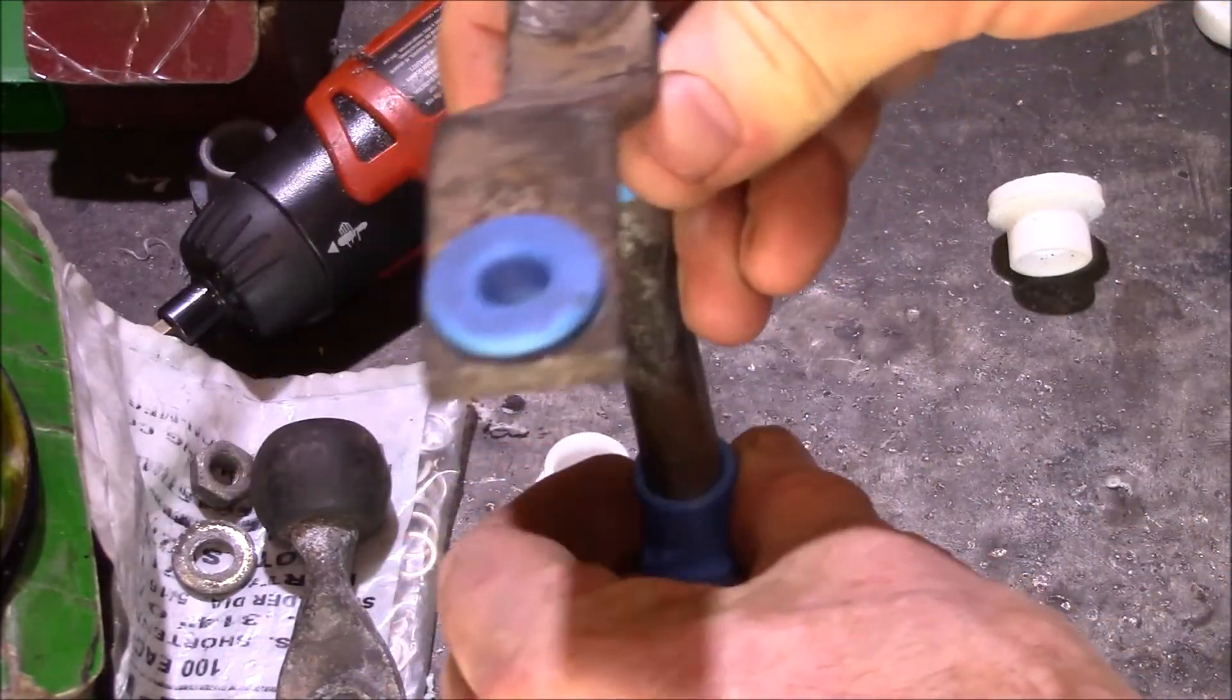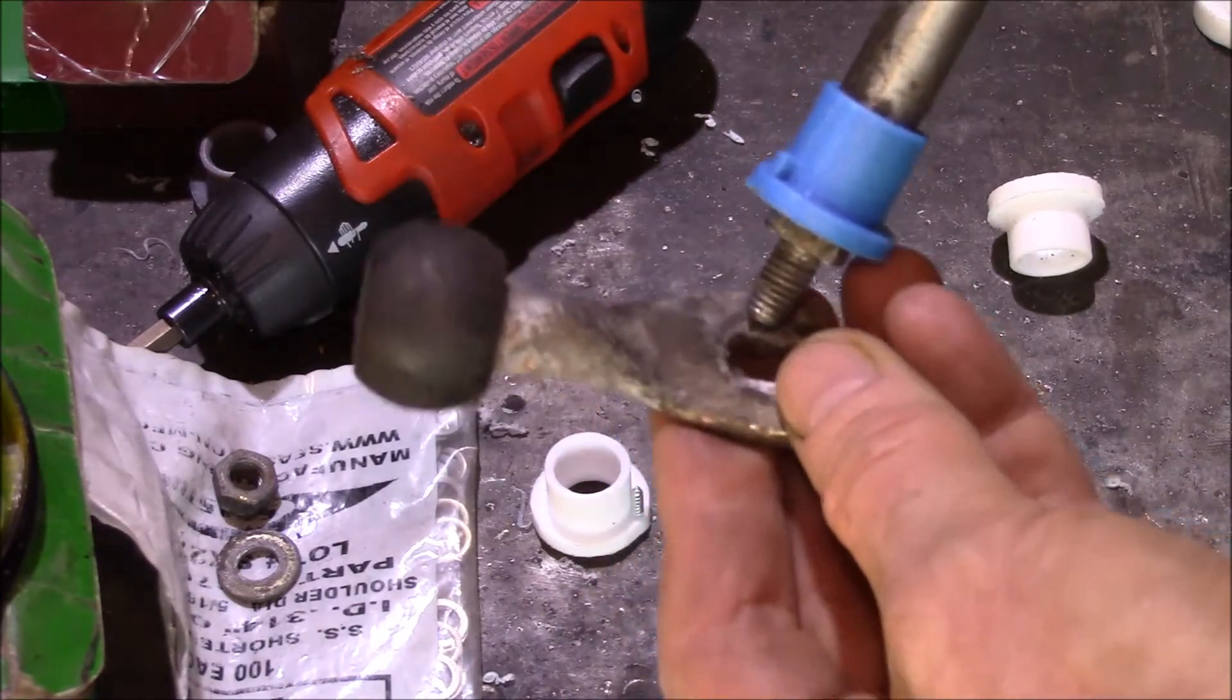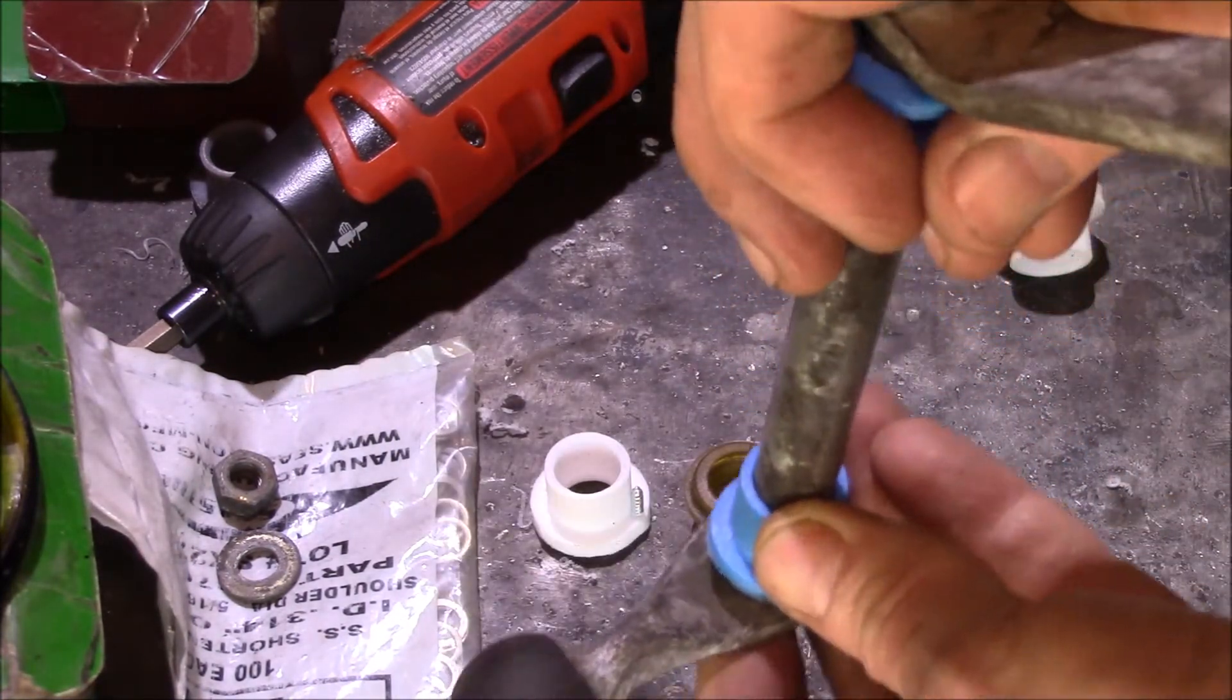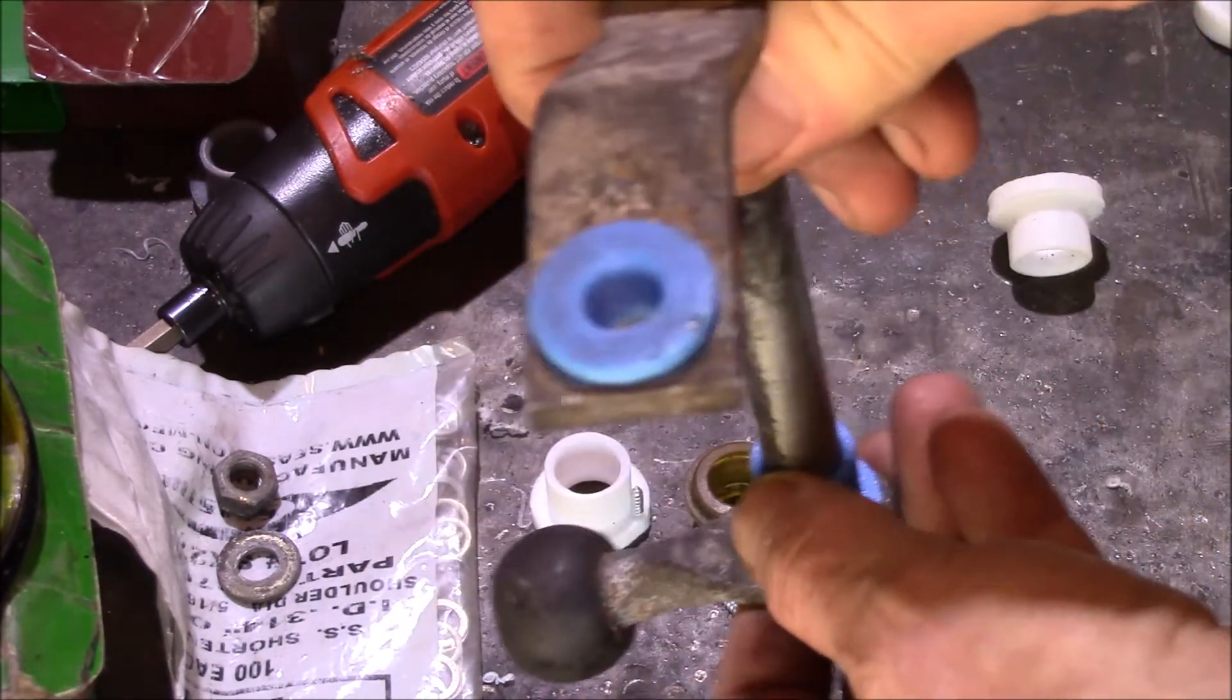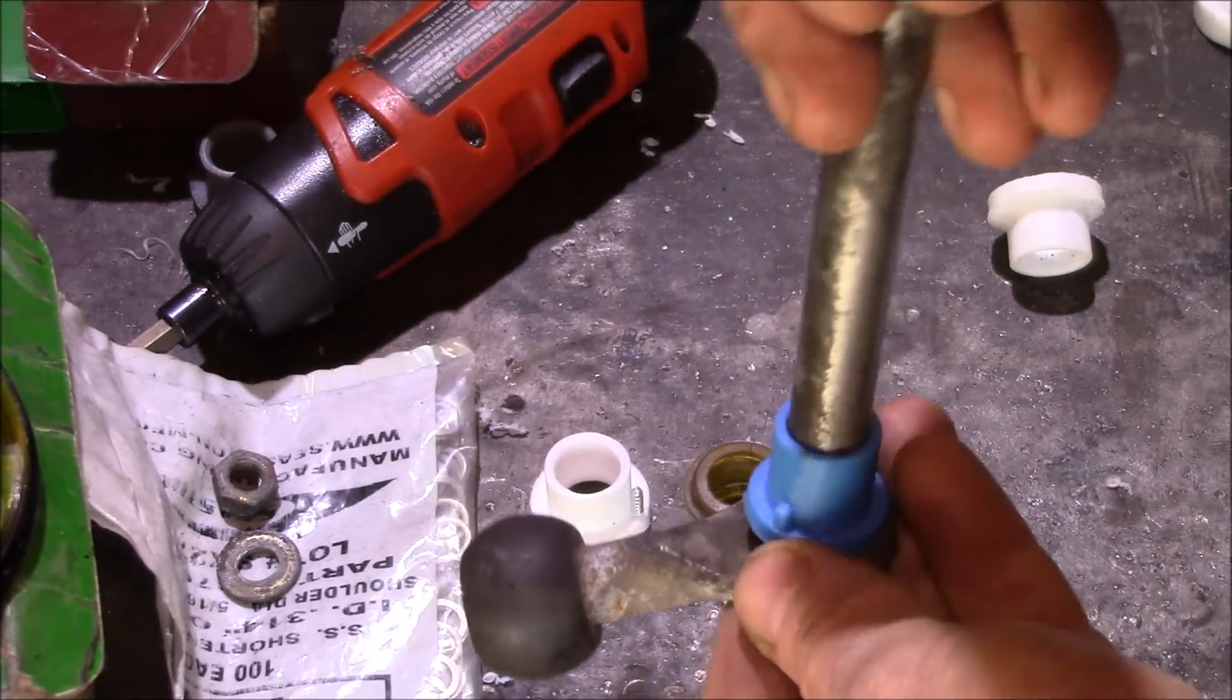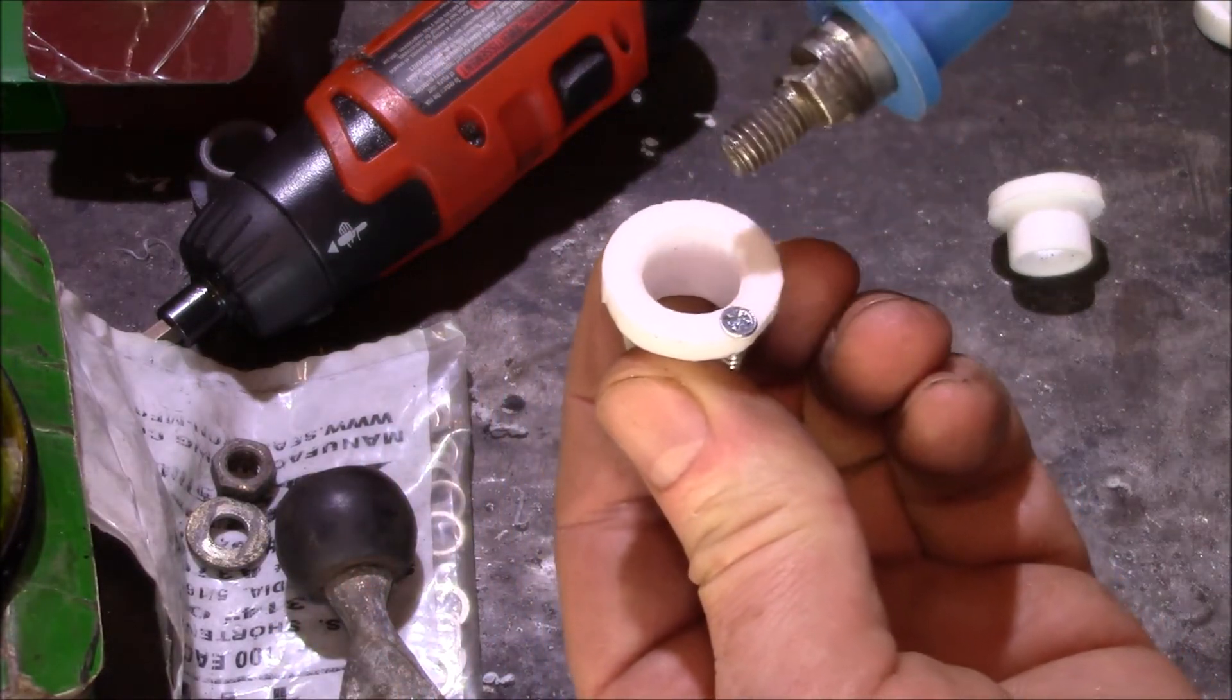This shaft should only turn on the vertical axis. It shouldn't move like that or like that because that's wasted motion. With the shift linkage on the Volkswagens, you only have a certain amount of travel at the shifter. And if any of that motion gets lost in this shaft wiggling around, you can't shift gears properly.